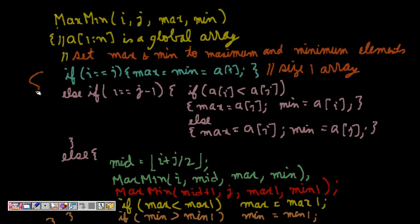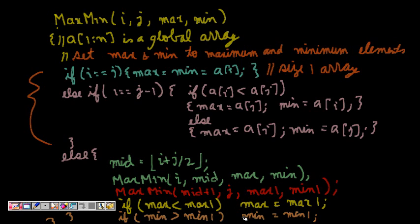For the general case, we find a middle element, then call max-min on the left sub-array from i to mid, and call max-min again on the right sub-array from mid+1 to j, storing results as max/min and max1/min1. To combine: if max is less than max1, max becomes max1. If min is greater than min1, min becomes min1.